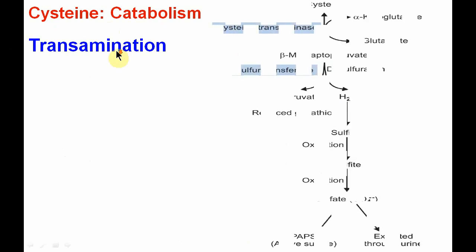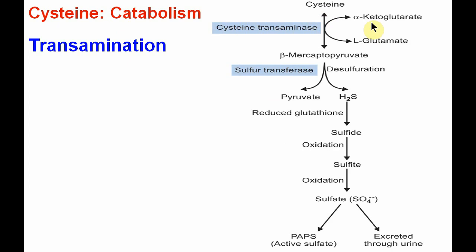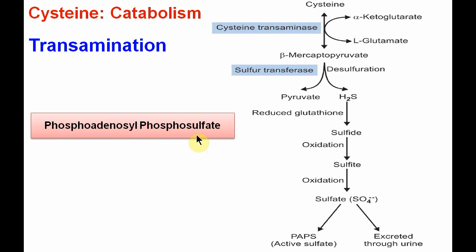Cysteine is catabolized in our body by three reactions. First, the transamination reaction: cysteine transaminates with alpha-ketoglutarate to form beta-mercaptopyruvate via cysteine transaminase. Beta-mercaptopyruvate upon desulfuration is converted to pyruvate and hydrogen sulfide (H2S), which upon reduction with glutathione is converted to sulfide. Sulfide through oxidation is converted to sulfate. Sulfate has two fates: it is either excreted through urine or converted to active sulfate — phosphoadenosine phosphosulfate (PAPS).